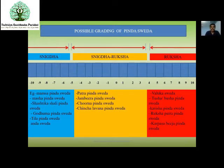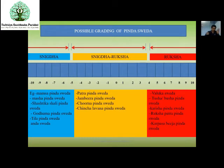In some thesis studies, the grading is from 0 to plus 1, and also minus 1, minus 2, minus 3. These gradings will be applied to determine which type of Sveda to adopt in which conditions — in which condition we can adopt Snigdha Sveda and in which condition we can adopt Ruksha Sveda.